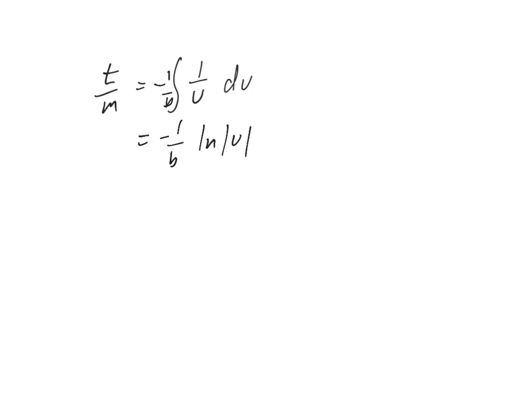And since it can never be negative, we put it in absolute values. And now let's go ahead and plug our u substitution back in. It was mg minus bv. So, plugging that back in, we have negative 1 over b, natural log of mg minus bv.